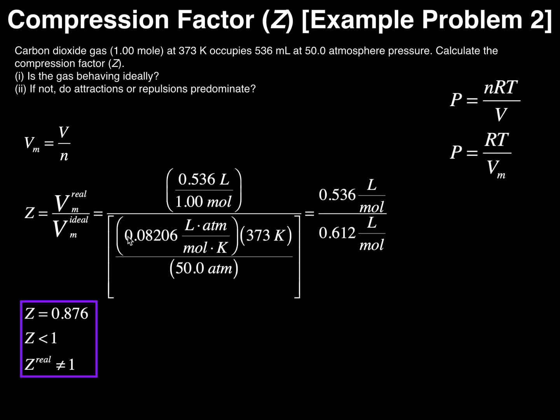Which would give me R times T over the pressure. If you imagine rearranging this equation to solve for molar volume, you get molar volume equals RT over P. So I'm going to plug that expression in here. The R I'm going to use in this case is 0.08206 liter atmospheres per mole per Kelvin.